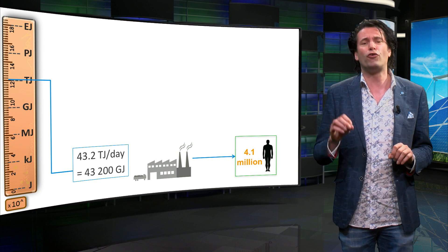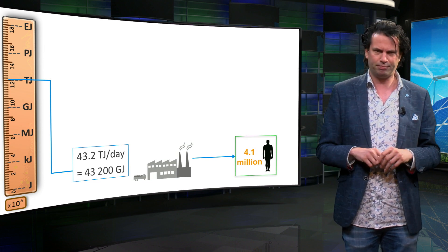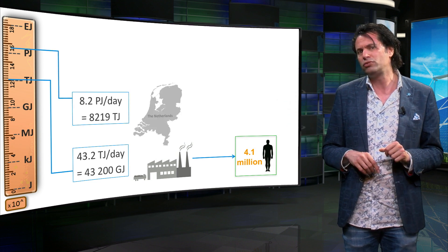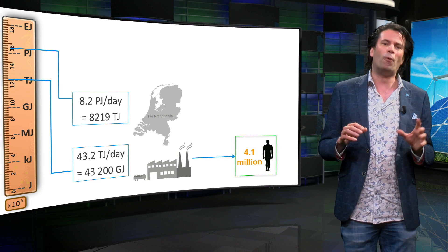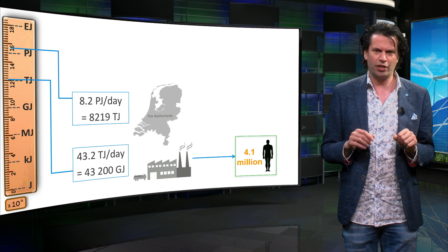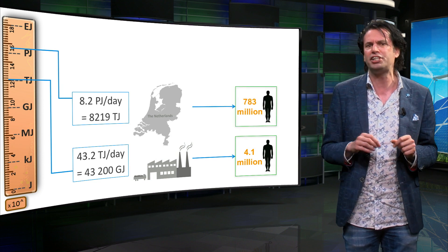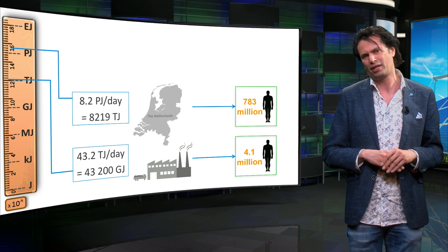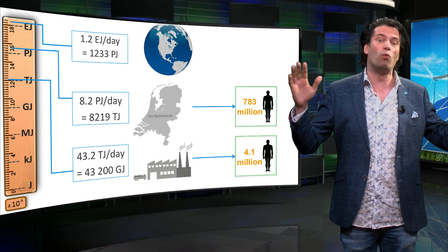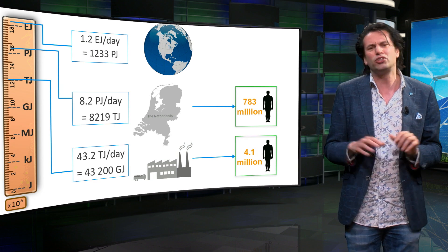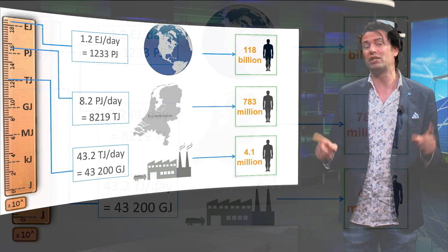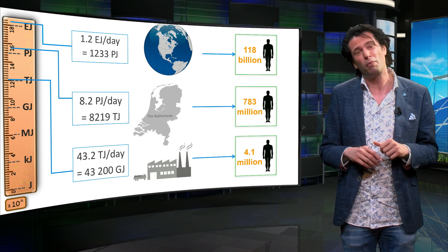A regular 500 megawatt coal-fired power plant produces over 43.2 gigajoules daily. This is enough energy for over 4.1 million people to sustain themselves for one day. The next step on the scale is the consumption level of entire countries. The daily energy consumption of the Netherlands, a small but developed country, is more than 8000 terajoules or 8 petajoules. A country of around 70 million people consumes enough energy every day to meet the daily food energy requirements of 783 million people. Finally, the daily energy consumption of the entire world is approximated at over 1200 petajoules, or 1.2 exajoules. This is equal to 180 billion human units. To put this into perspective, the entire human population on earth in 2016 is 7.4 billion people.